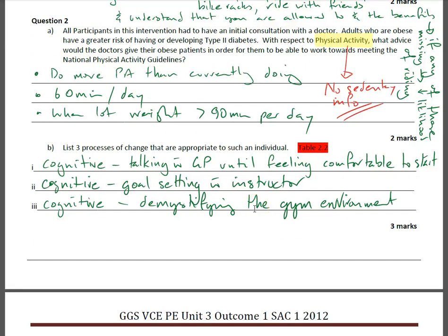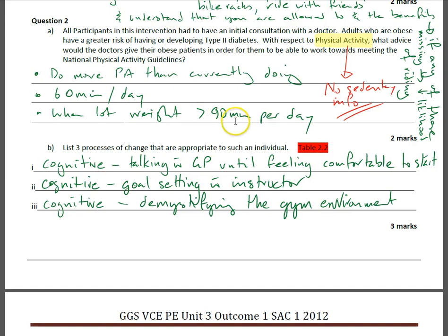Question 2: All participants in this intervention had to have an initial consultation with the doctor. Adults who are obese have a greater risk of having or developing type 2 diabetes. With respect to physical activity — and it's important to note it says physical activity, meaning we can't refer to sedentary information — the advice would be to do more physical activity than they are currently doing, try to get to 60 minutes a day, and when they have lost their weight, do a minimum of 90 minutes per day.